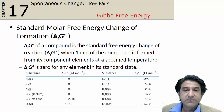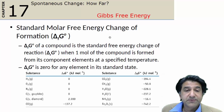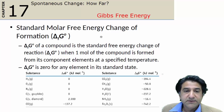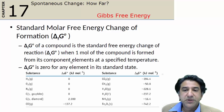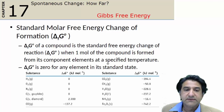It's given this symbol here, delta G⁰ of formation. And what it is, is exactly what you expect — the free energy of formation of a substance, of a compound, usually one mole of a compound, from its component elements when they're in their standard states.